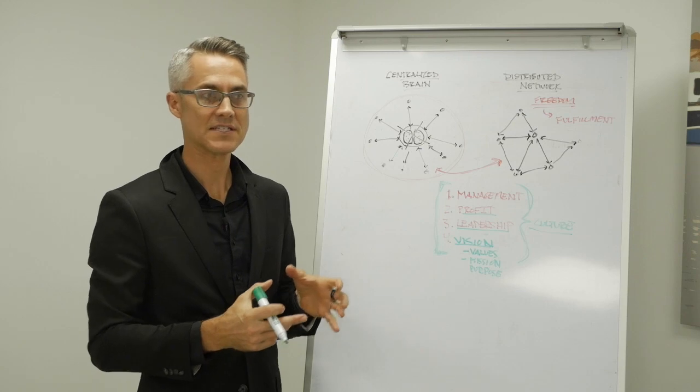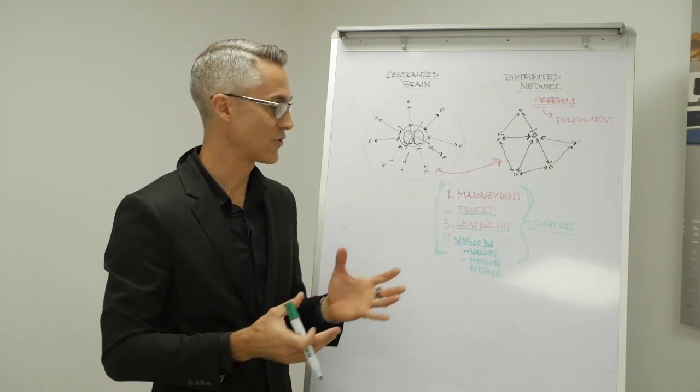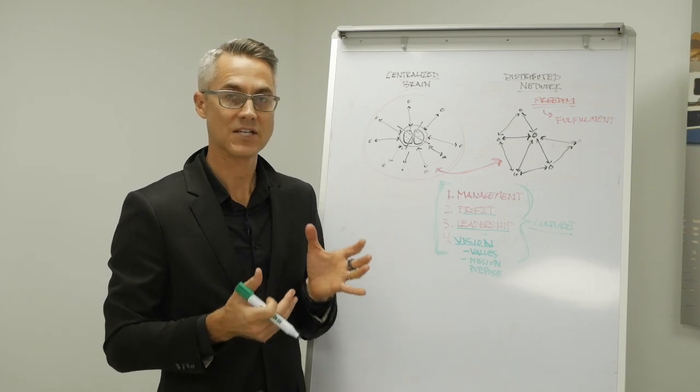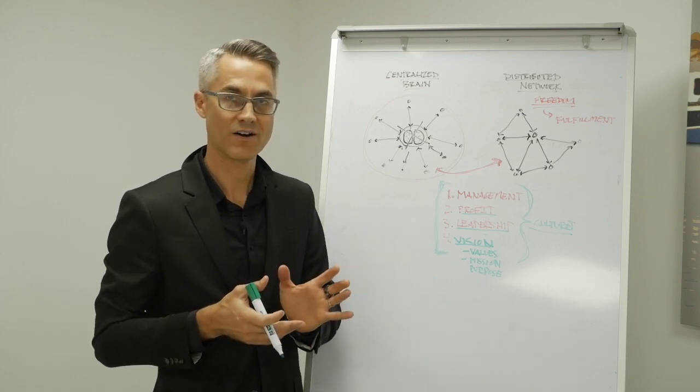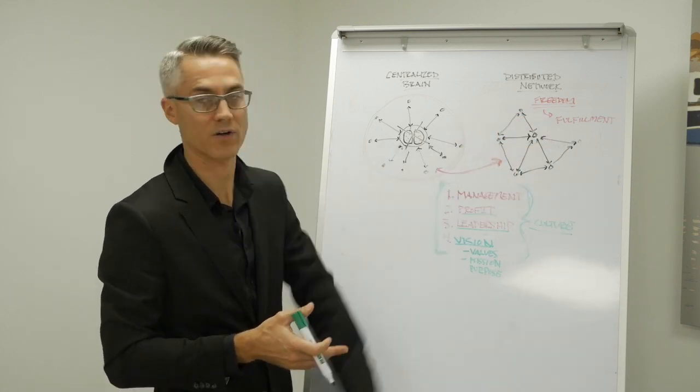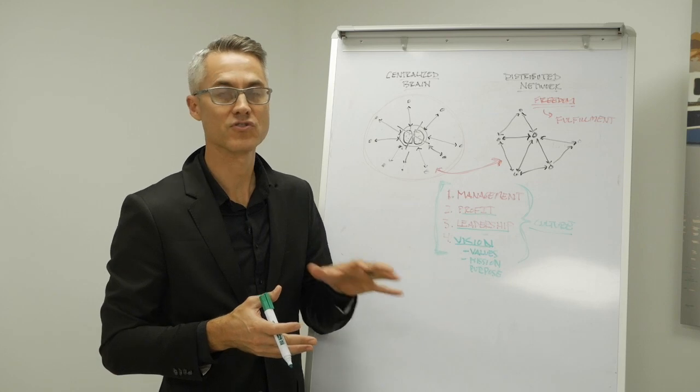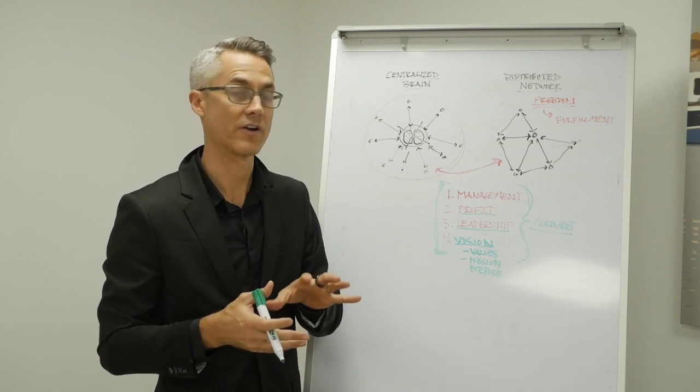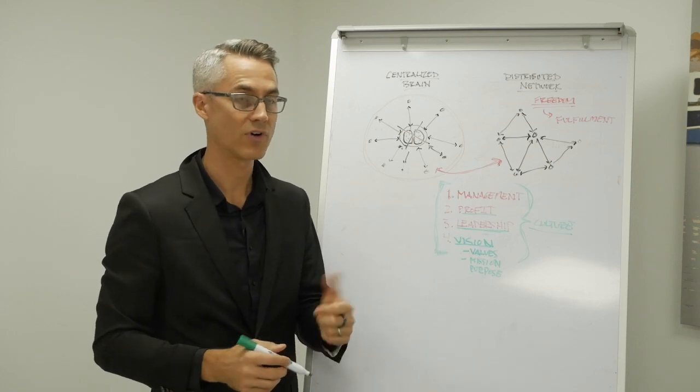Number three is leadership. So this is how we actually develop our people and help them grow within the organization. So key to this idea of leadership is succeeding through other people. So we don't need to do everything ourselves. This is the distributed network framework over here, is that we actually succeed through the team members, through the outsourced staff, through the consultants on our team. And we do this through leadership systems, meaning that we have training involved.